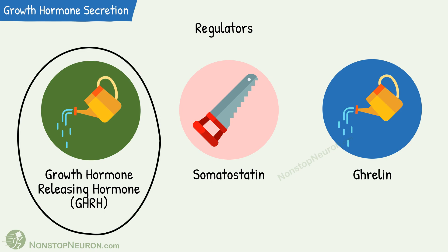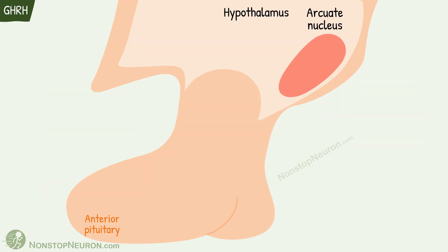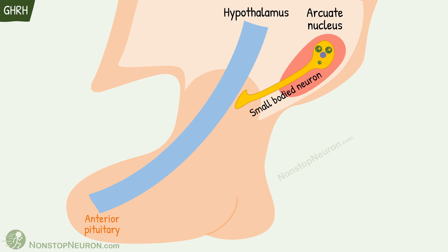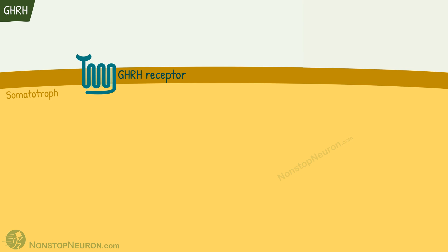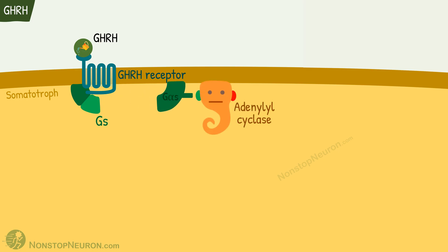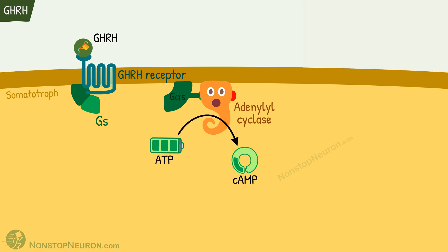Let's first talk about growth hormone releasing hormone. The arcuate nucleus in the hypothalamus contains small-bodied neurons that synthesize and release growth hormone releasing hormone into the hypothalamic-hypophyseal portal blood vessels. From here it goes to the somatotrophs in the anterior pituitary, where it binds with GHRH receptors on the cell membrane. These GHRH receptors are G protein coupled receptors associated with Gs protein, and their stimulation activates GαS, which in turn stimulates adenylyl cyclase. Adenylyl cyclase converts ATP into cyclic AMP, resulting in a rise in cAMP level.